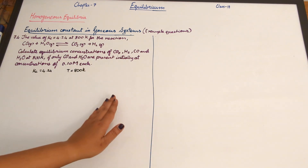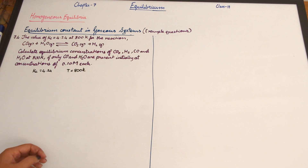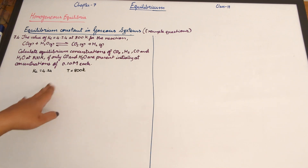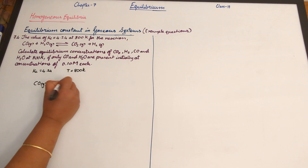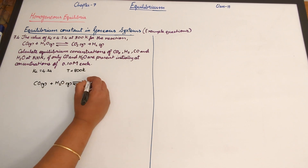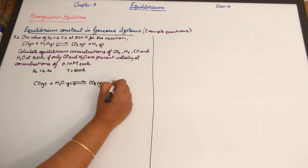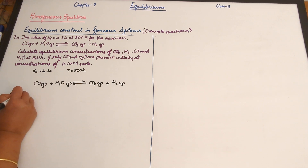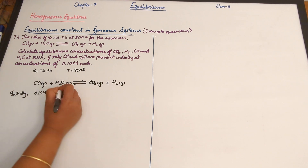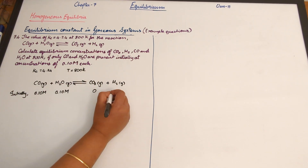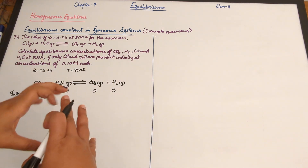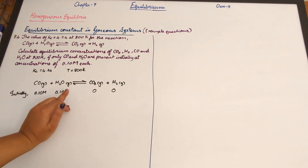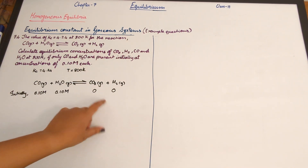As we move forward with the chemical reaction, there will obviously be a change in concentration. Initially, the concentration of carbon monoxide and water was 0.10 molar each. As the reaction progresses, carbon monoxide (gas) reacts with water (aqueous) to form carbon dioxide (gas) and H₂. Initially, the concentrations of CO and H₂O are 0.10 molar each, while the concentrations of CO₂ and H₂ are 0.